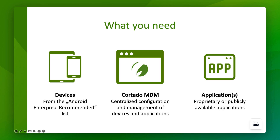To successfully set up a kiosk system, you need three main components. First, you need Android Enterprise-recommended devices, which are ideally suited for kiosk use due to their reliability and security standards. Next, Cortado MDM is crucial because it allows you to configure and manage these devices centrally, ensuring that the devices always work optimally and only access the applications they are intended for. All you need to do is select the right applications to be used in kiosk mode — either company-owned applications or public applications from the Google Play Store.